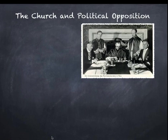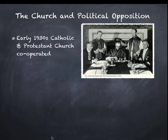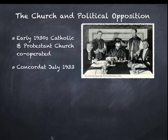What about the church and political opposition? Remember there's the Catholic Church, mostly in southern Germany, and Protestant churches more in northern Germany. These are supposed to be, if obeying the teachings of Jesus about non-violence and being compassionate, against the Nazi Party and everything it stands for. However, in the early 1930s, both the Catholic and Protestant churches did cooperate, largely through fear and intimidation. A Concordat was signed in July 1933 between the Pope in Rome, the head of the Catholic Church, and the Nazi Party.